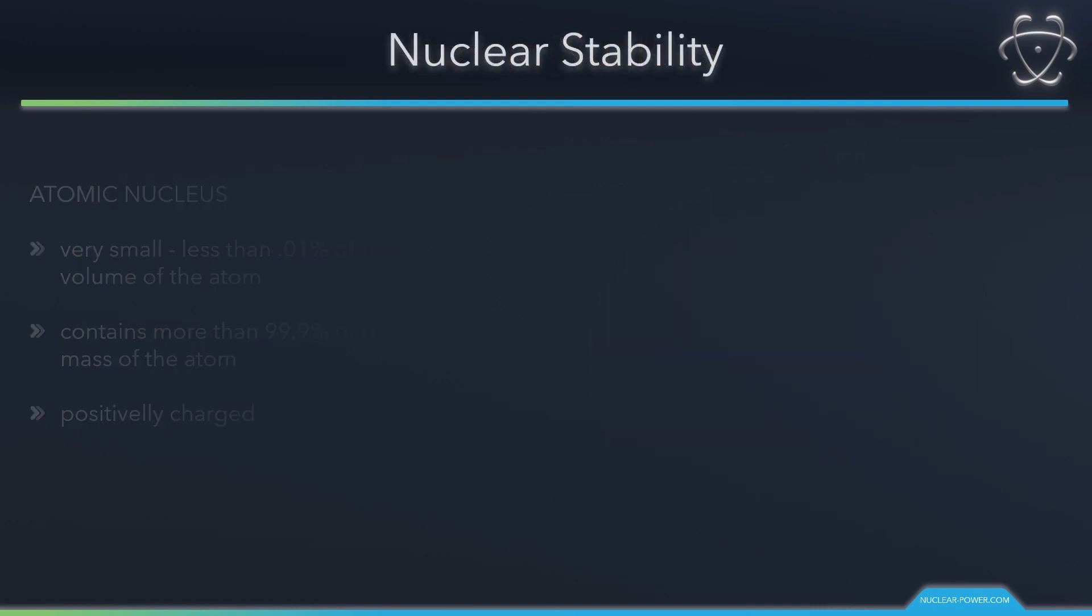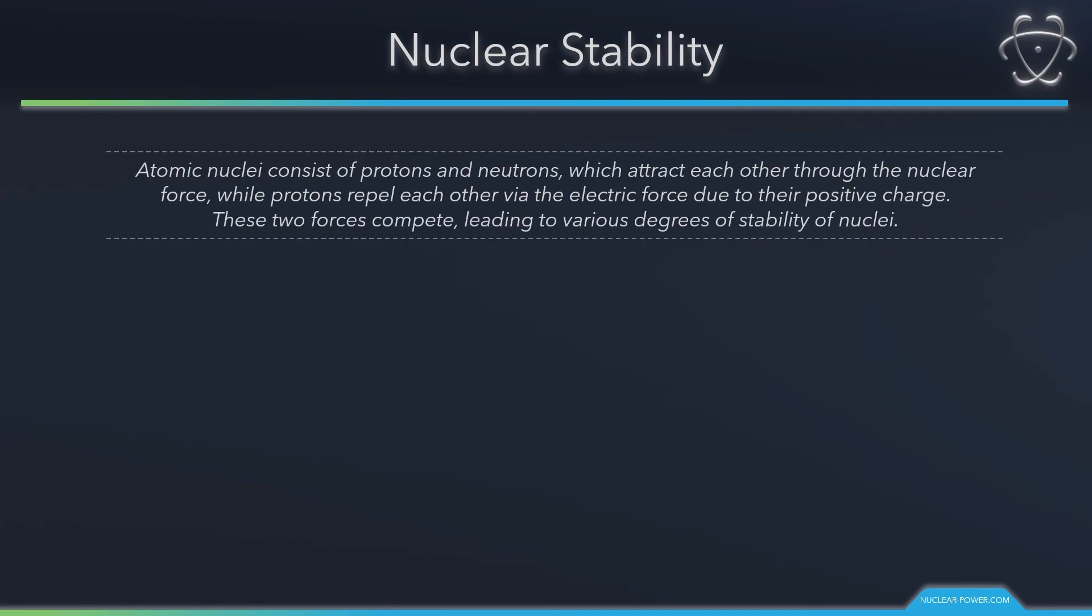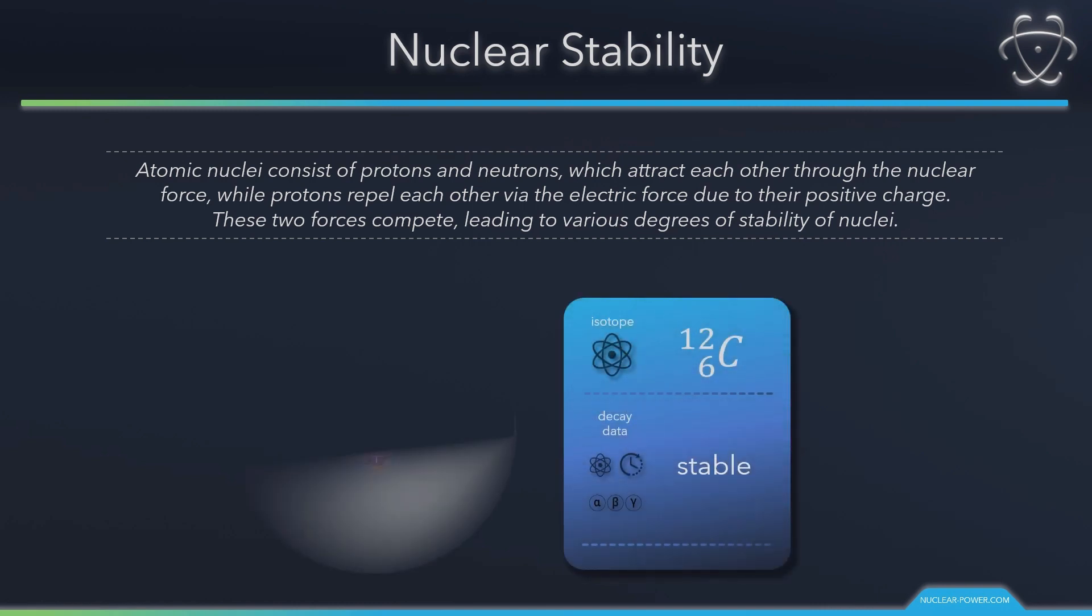The following statement is a key takeaway to the whole issue of nuclear stability. Atomic nuclei consist of protons and neutrons, which attract each other through the nuclear force, while protons repel each other via the electric force due to their positive charge. These two forces compete, leading to various degrees of stability of nuclei.